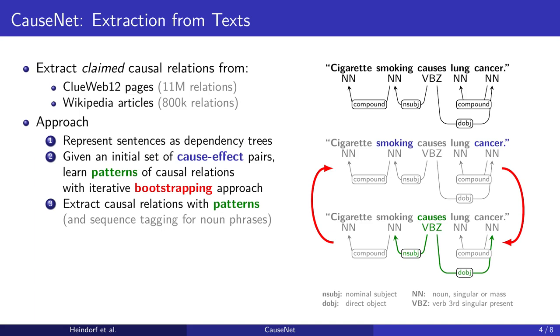For example, we learn that the verb causes preceded by a subject succeeded by an object signals causality. In our case, we started with 8 initial cause-effect pairs, performed 2 bootstrapping iterations and extracted 53 patterns representing causality.